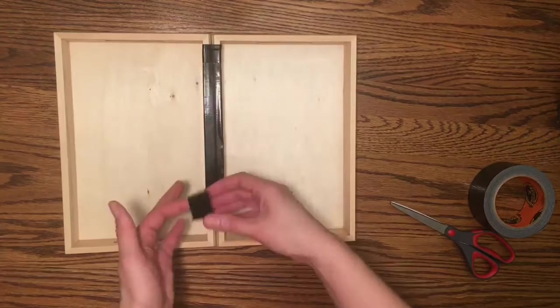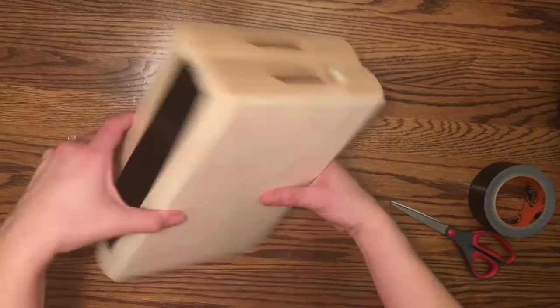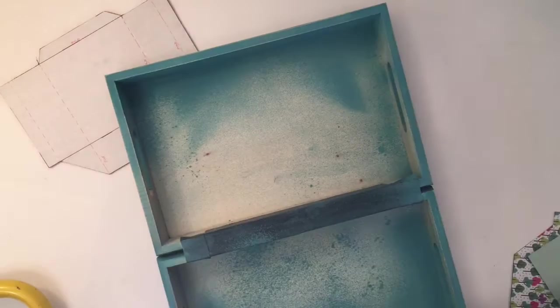Next I took it outside and I put a couple coats of spray paint on it. So I started with a white and then I added a chalk paint blue, and once that was dry I sanded it down to give it kind of a shabby chic look. Your next step will be measuring to create the pattern for your pencil boxes.